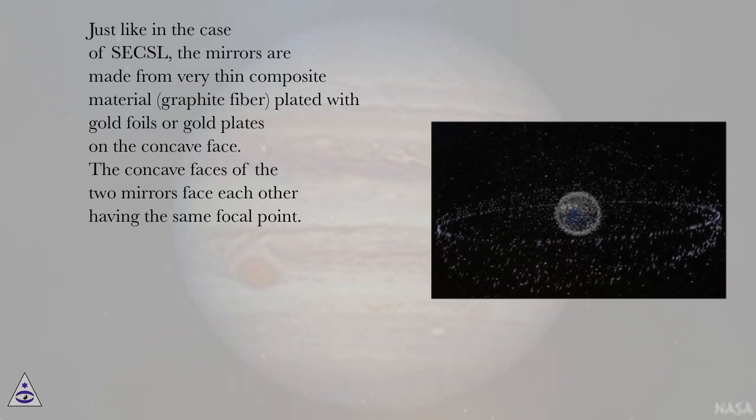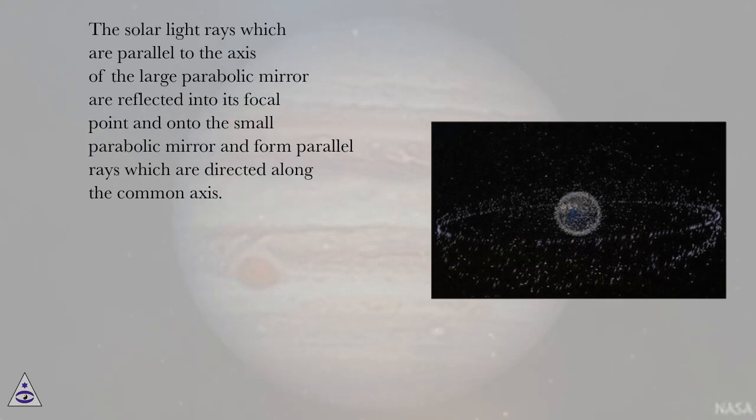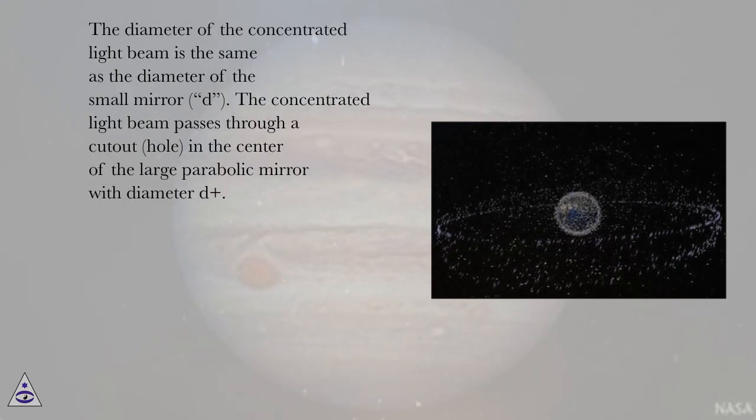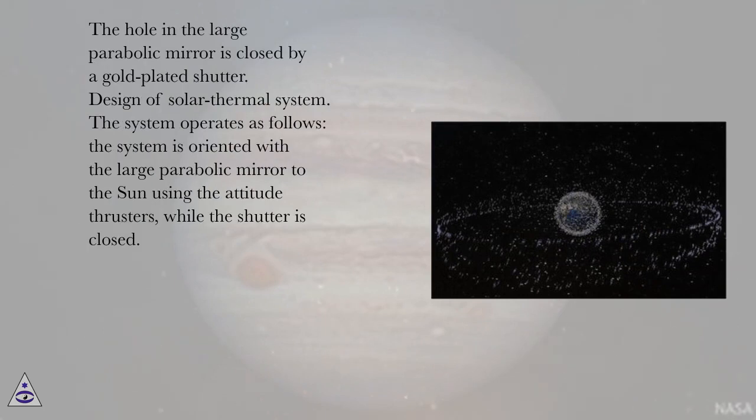The concave faces of the two mirrors face each other having the same focal point. The solar light rays which are parallel to the axis of the large parabolic mirror are reflected into its focal point and onto the small parabolic mirror and form parallel rays which are directed along the common axis. The diameter of the concentrated light beam is the same as the diameter of the small mirror, D. The concentrated light beam passes through a cutout hole in the center of the large parabolic mirror with diameter D+. The hole in the large parabolic mirror is closed by a gold-plated shutter.